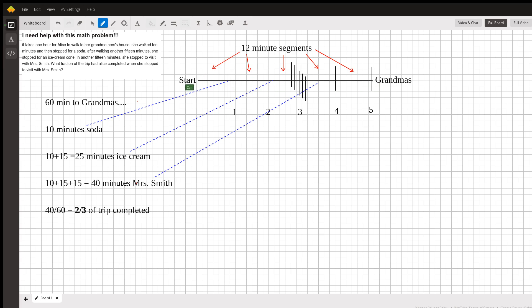Five equal 12-minute segments. These are 12 minutes each to help you graphically see what's going on as Alice travels from the start to grandma.